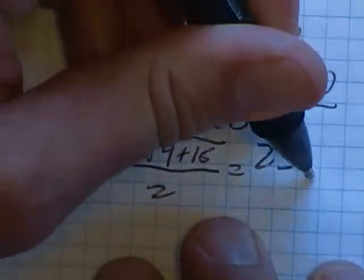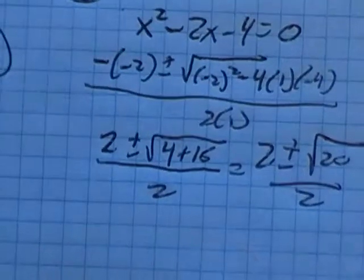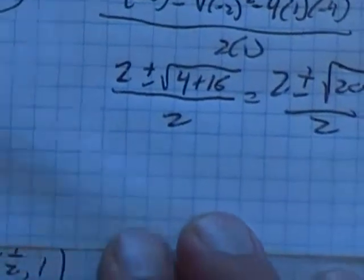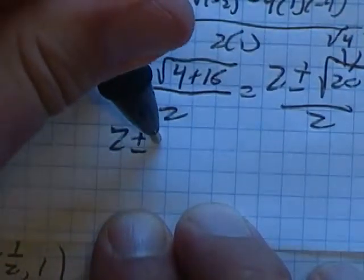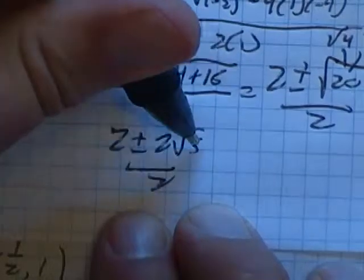So then I have 2 plus or minus the square root of 20 over 2. 20 is 4 times 5. Those are still square rooted, so this is 2 root 5. 2 plus or minus 2 root 5 over 2.